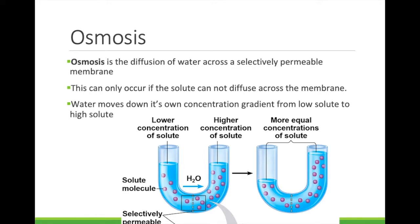Water will move from an area of high concentration of water to an area of low concentration of water. Take a look at the U-shaped tube. The membrane at the bottom will let water pass through it, but not the purple spheres. On the left of the membrane there is a higher concentration of water because it has less solute. On the right, there is a lower concentration of water because it has a high concentration of solute. The water will move from the left to the right side of the membrane.